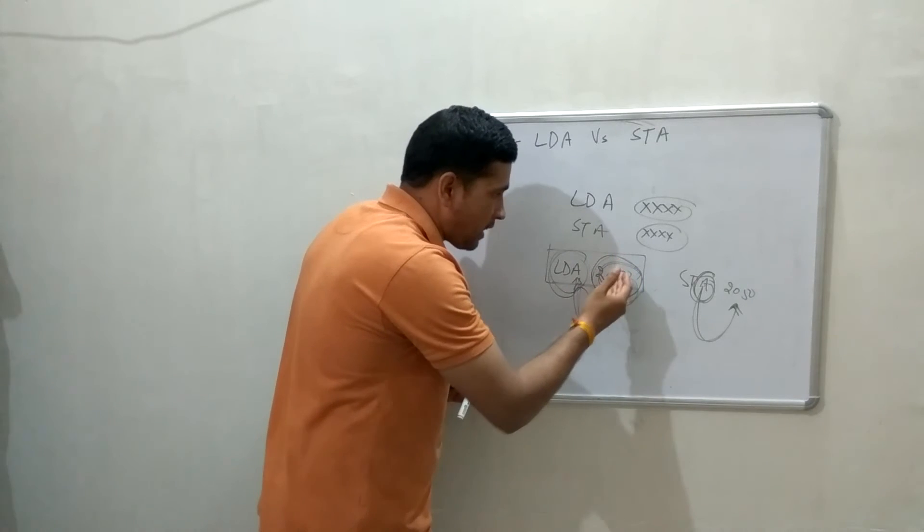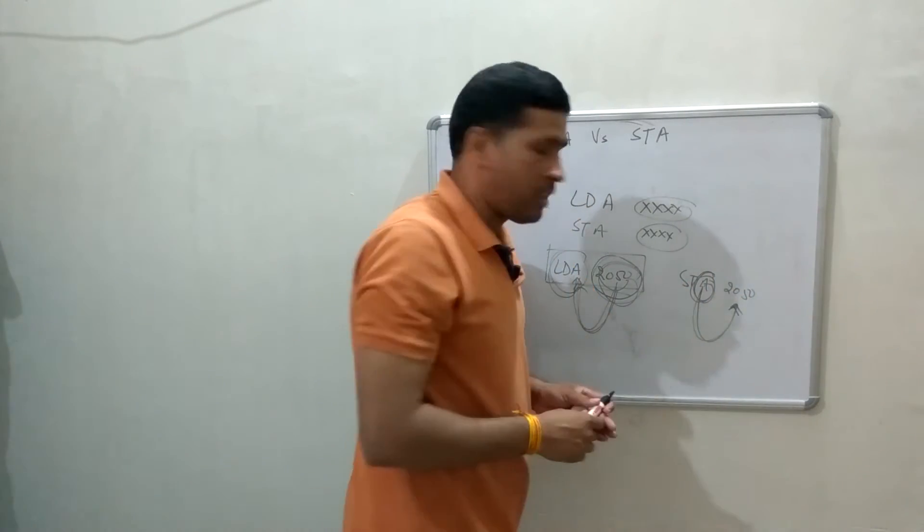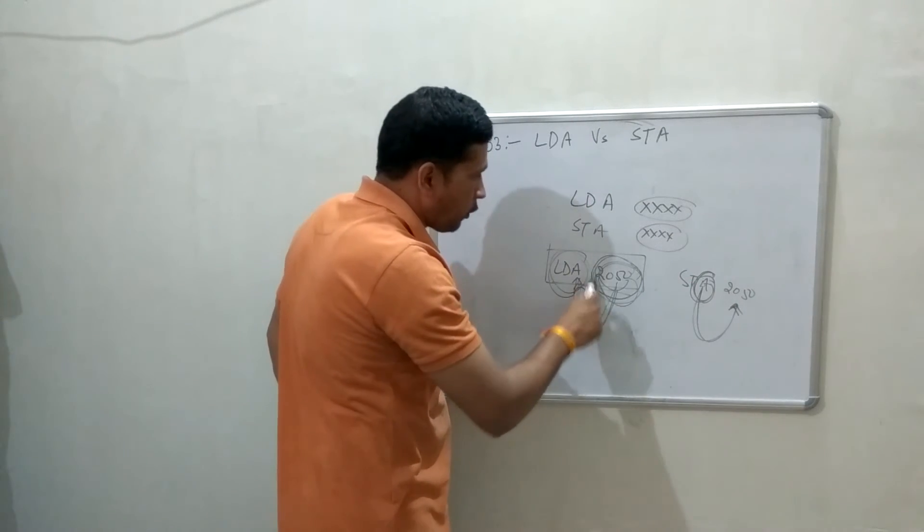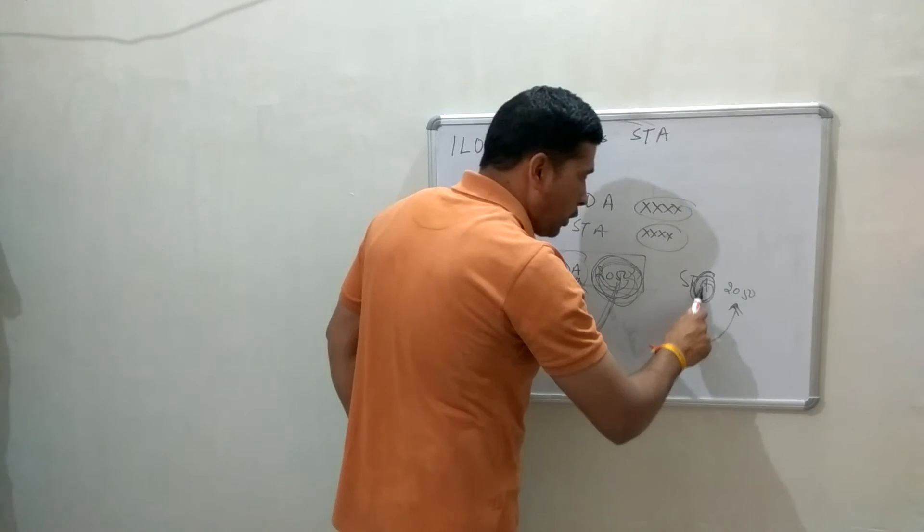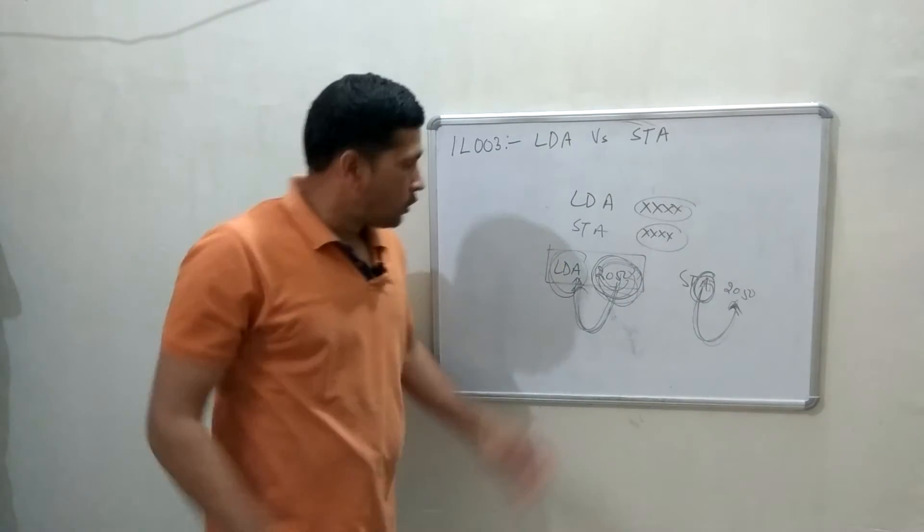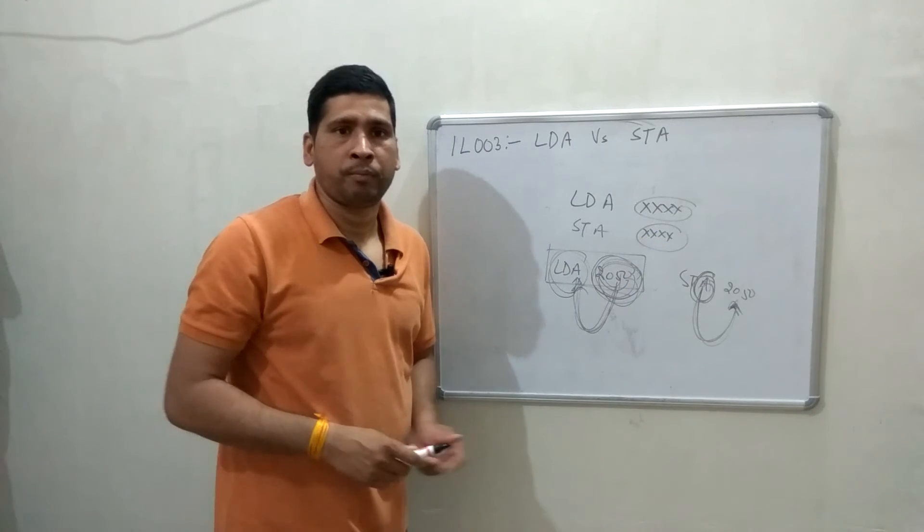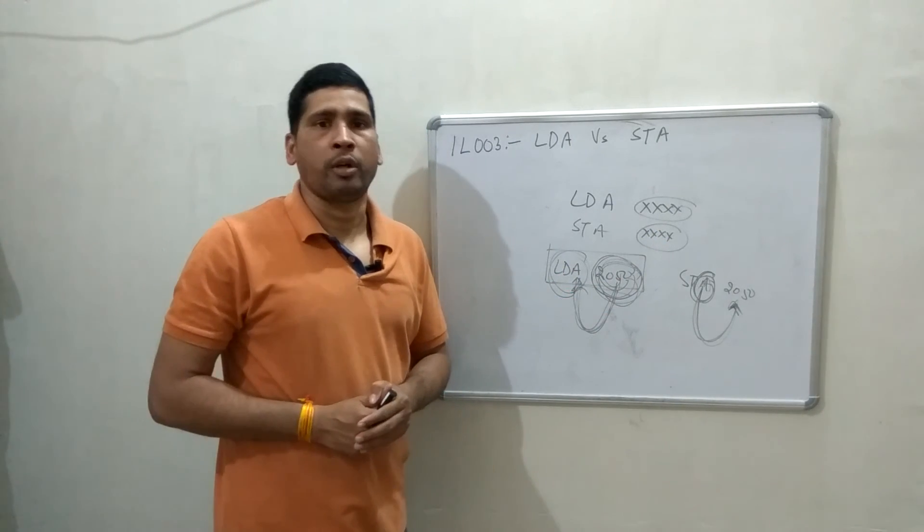In LDA, you are going to load the content from this location into the accumulator. In STA, you are going to store the content of the accumulator at this location. So these are the basic differences. Please subscribe to this channel for more instructions and for more programming.